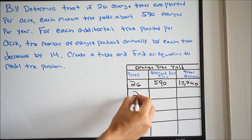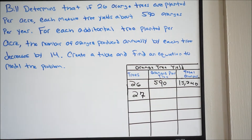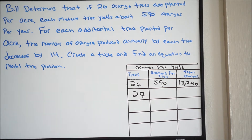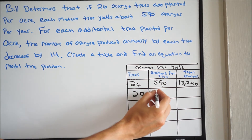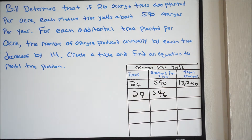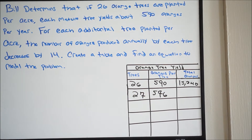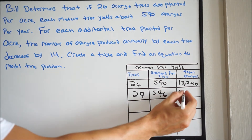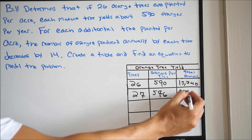So if you're at 27 trees, we know that the oranges per tree will naturally go down by 14. So instead of having 590, you're going to have 576. And now we want to know the total oranges — we're just going to multiply these two numbers together. So we'll do 27 times 576, and we'll get 15,552.